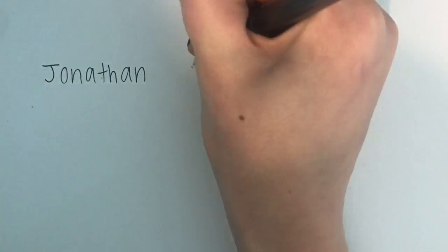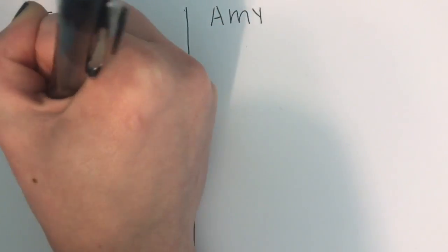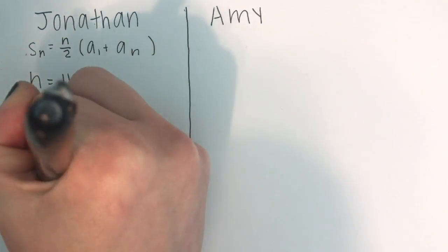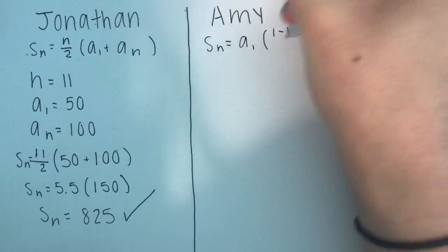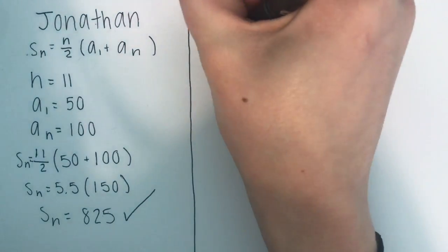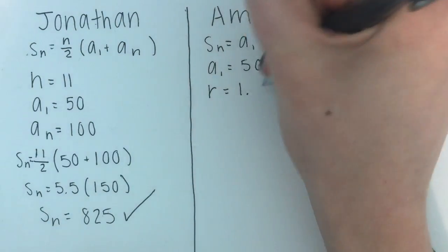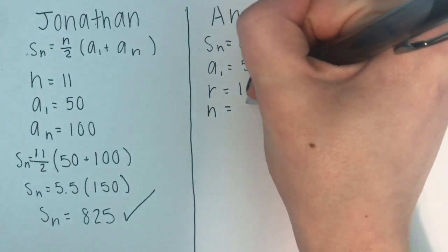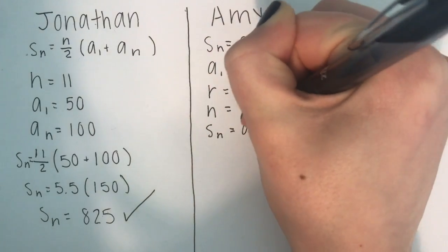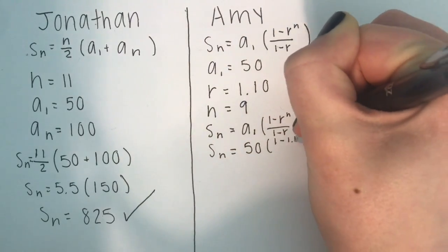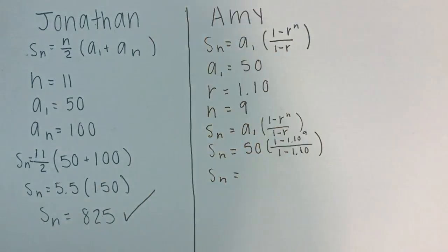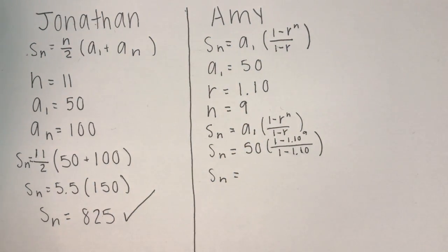Now, if they wanted to know the total temperature applied for all of the data combined, they can use the sum formulas for each of the arithmetic and geometric equations. For the arithmetic equation, the sum formula is n over 2 times (a1 plus an). Substituting Jonathan's values into that formula, Jonathan found the sum to be 825. Next, Amy used the geometric sum formula: s sub n equals a sub 1 times (1 minus r to the power of n) over (1 minus r). Since Amy was looking at full minutes and it boiled between the 8th and 9th minute, she rounds up to n equals 9. Finally, Amy got s sub n equals 678.